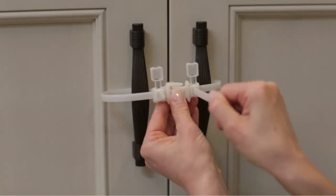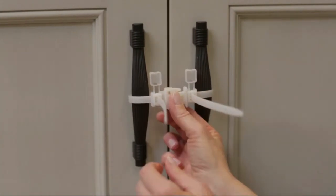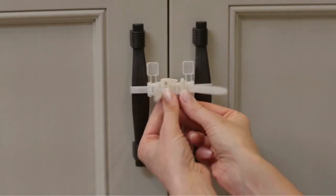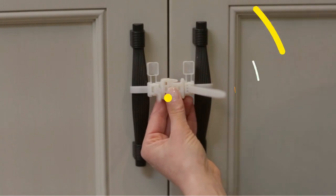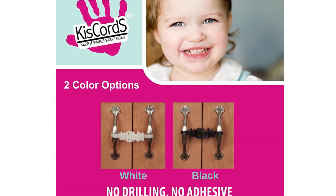No drilling, no adhesive, no lost or misplaced magnets and no damage to cabinets. This baby safety cabinet lock design is easy for adults to open, but difficult for small children. Kiscord's Child Safety Cabinet Straps are the smallest lock on the market.